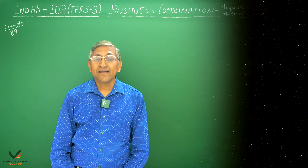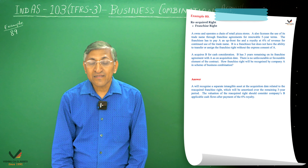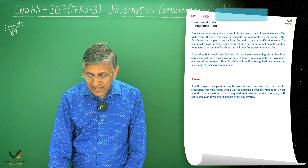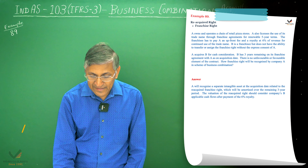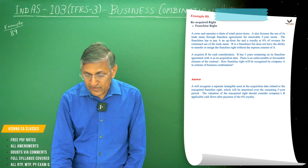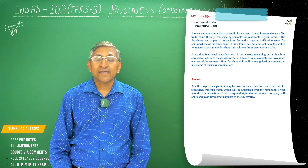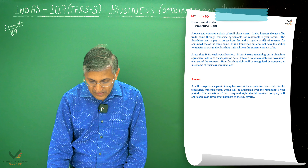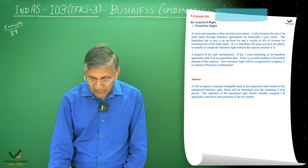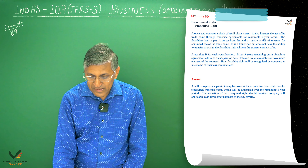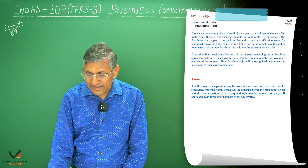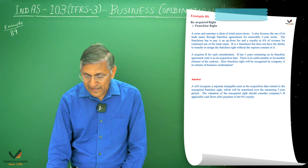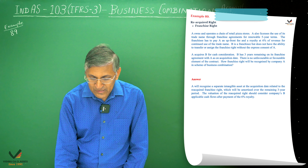Now let us look at Example 89. In this question, A owns a chain of retail pizza courses. A also licenses its trade name through franchise agreements for renewable 5-year terms. A is a franchisor, and the franchisee will pay a royalty fee of 6% of revenue for continued use of the trade name. The franchisee also has the ability to transfer and assign the franchise rights without the express consent of A.